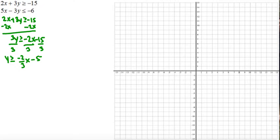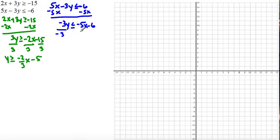I do the same thing to the bottom inequality. 5x minus 3y is less than or equal to negative 6. Subtract 5x on both sides, so negative 3y is less than or equal to negative 5x minus 6. Divide both sides by negative 3.